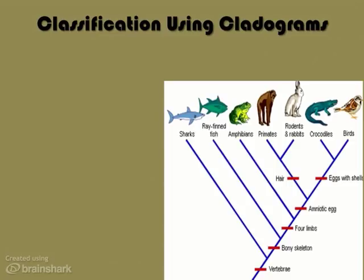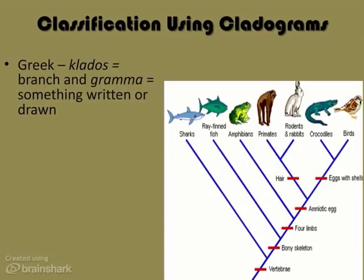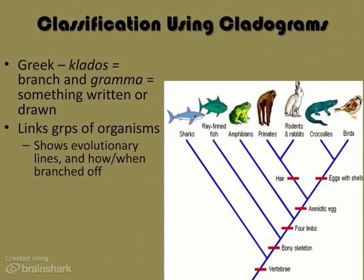A little grammar lesson here. When we learn all these various terms in biology, it's often helpful to know the roots or origins of these terms, because it helps you remember them. Cladogram comes from the Greek word kledos, meaning branch, and grama, meaning something written or drawn. A cladogram links groups of organisms that are related by evolutionary trends rather than simply physical traits. Biologists study the when and the how that a trait appeared to cause that species to branch off, so it shows evolutionary lines.